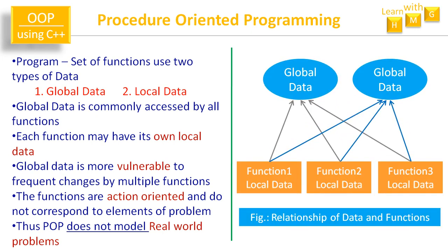This diagram shows the relationship between data and functions. Function one has its own local data, function two has its own local data, and function three has its own local data. There is also global data in the program, which is commonly accessible to all three functions. So every function operates on its own local data plus the global data.